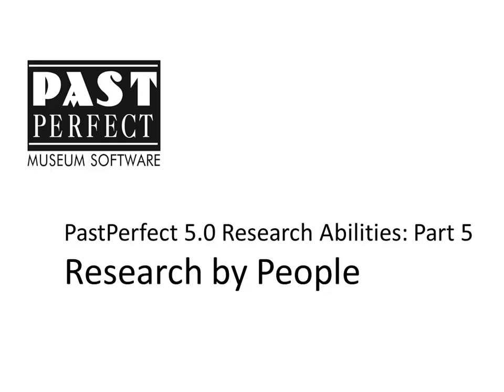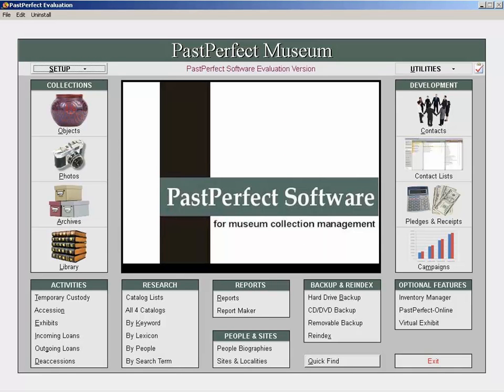Research by People is a way to search the People Authority file to find items associated with specific names. To access the Research by People ability, click on By People under Research from the main menu.